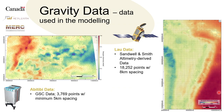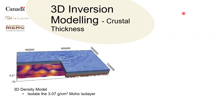The two data sets I used: one was the GSC gravity data over the Abitibi, and then the other was a satellite altimetry-derived data set over the Lau Basin. Looking at the data itself really only gives you a 2D plane, but by modeling it, it gives you depth information of what's going on deeper into the crust.